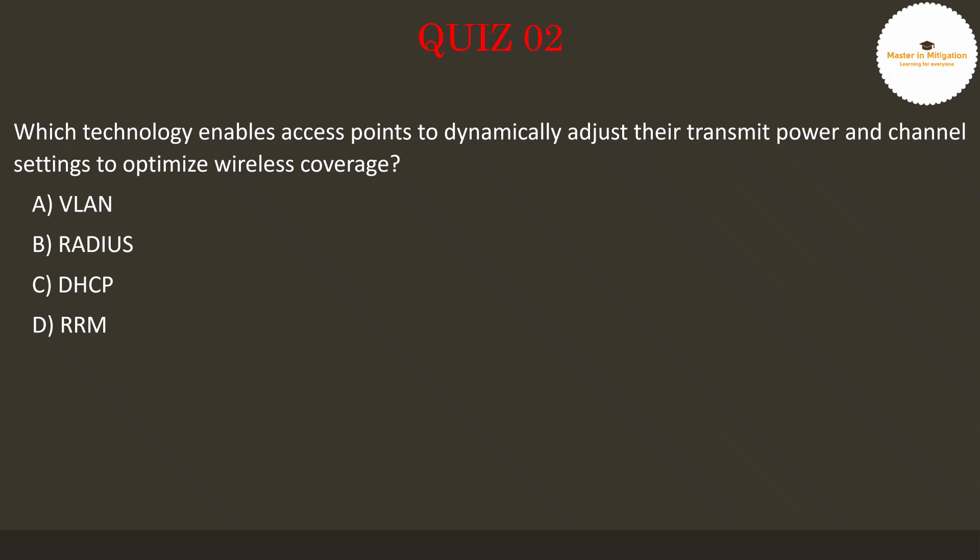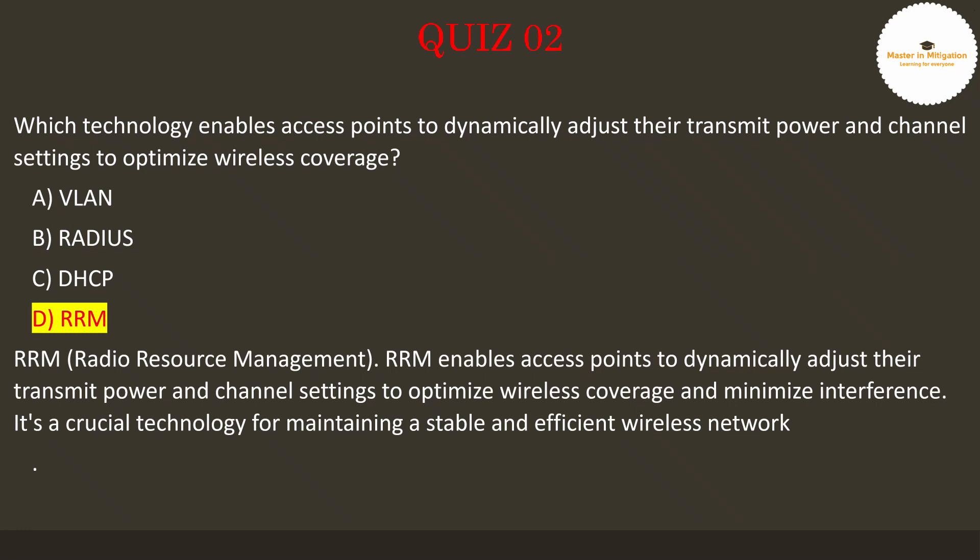The answer is D. RRM — Radio Resource Management. RRM enables access points to dynamically adjust their transmit power and channel settings to optimize wireless coverage and minimize interference. It's a crucial technology for maintaining a stable and efficient wireless network.